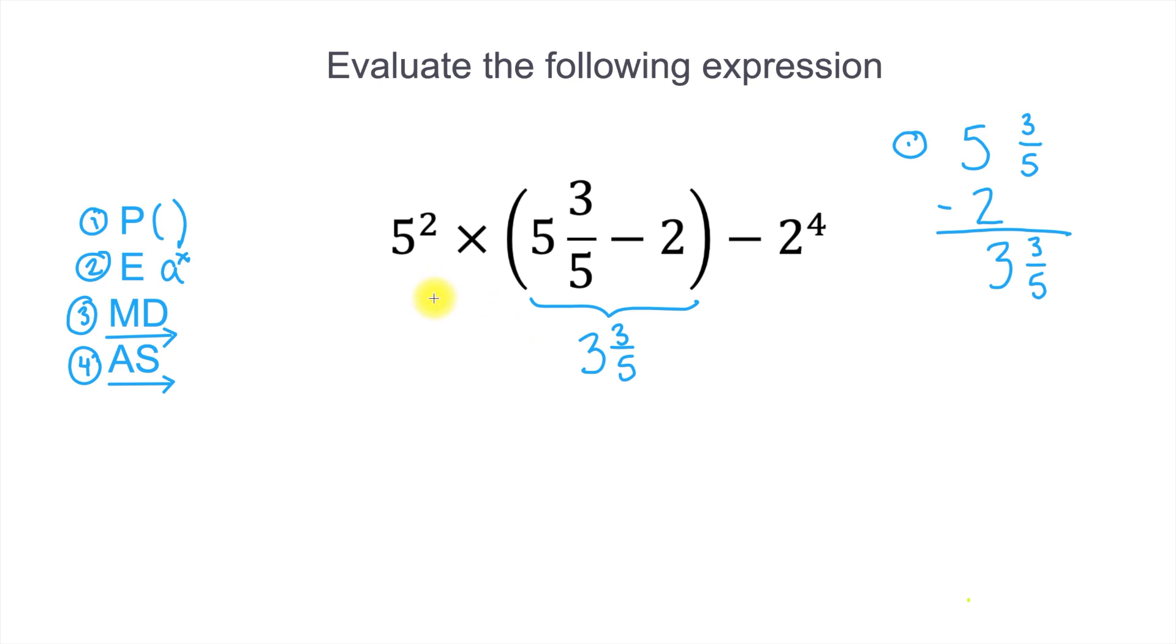And I'm just going to bring down now anything that I haven't used. I haven't used the 5 to the second power yet, so I'll bring that down. I haven't used my multiplication yet, so I'll bring that down as well. I brought down my 5 to the second. I'll bring down my multiplication. The result of the work in parentheses is written down here. And I haven't used my minus sign yet. And I haven't used my 2 to the fourth. So do you see any more parentheses in our new expression down here? No. So I'm all done with parentheses, and I'll check that off.